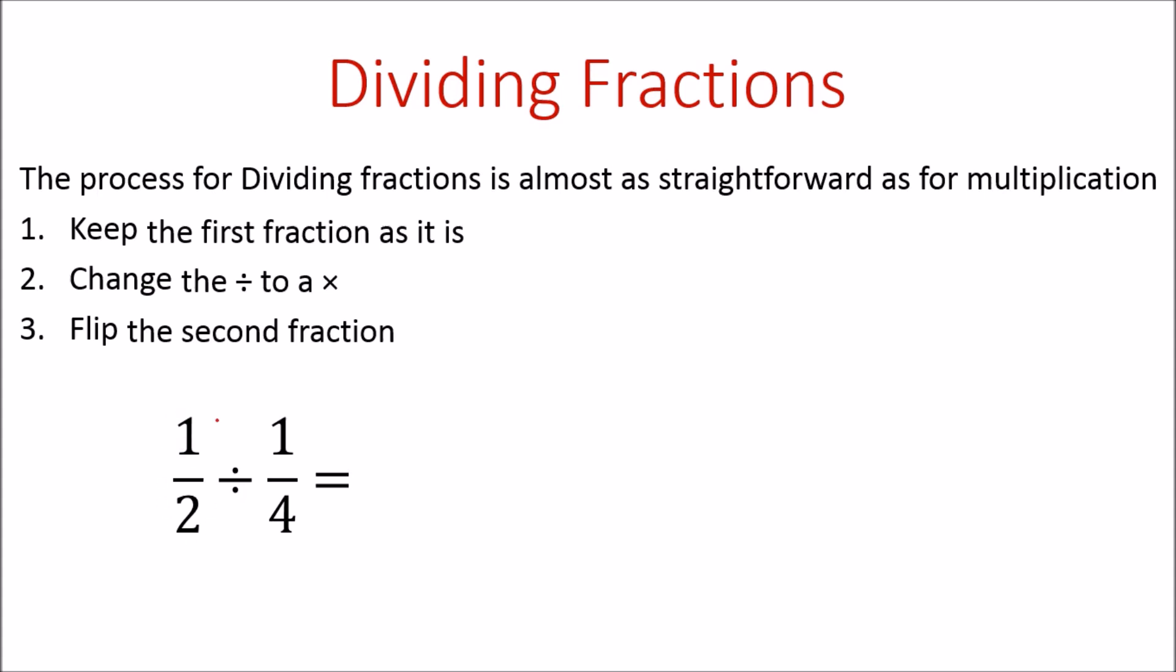Let's have a go with this example. We're going to keep the first fraction, so we're going to keep the 1/2 as it's already written. We're going to change our divide sign to a multiply, and we're going to flip this second fraction. That means our 1 is going to go down and our 4 is going to go up, so we're writing the reciprocal, which is 4 over 1.